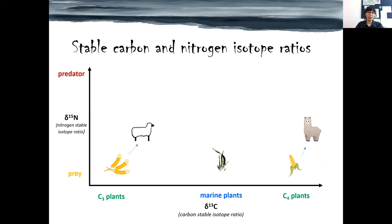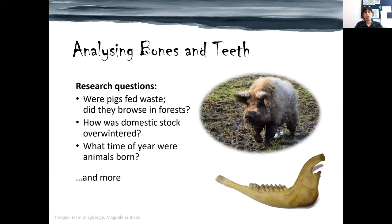A wolf that eats the sheep would have a higher nitrogen isotope ratio than the sheep. Some of the questions we can address with this include things like: were pigs fed slaughter waste or possibly kept close by in the village, or were they kept in forests? Were there specialized animal husbandry regimes? For example, when there are two calving periods, this has implications for milk provision.